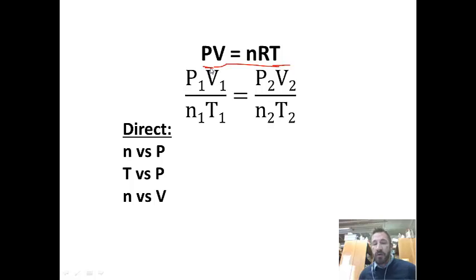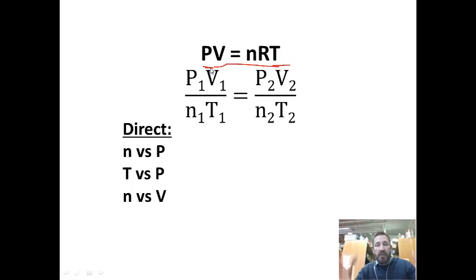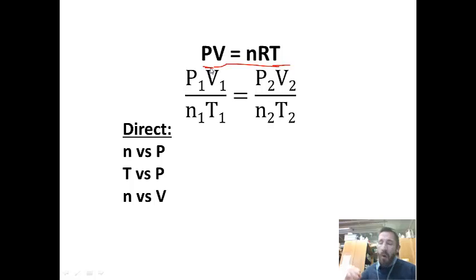Let's look at other things that have a direct relationship: number of moles and volume. For this, you need a flexible container, like something with a piston or a balloon. What we're holding constant here is temperature — we're not making the molecules go faster or slower — and pressure, so it can freely move. If you pump more and more particles in, that volume goes up and up proportionally. That's called a direct relationship.